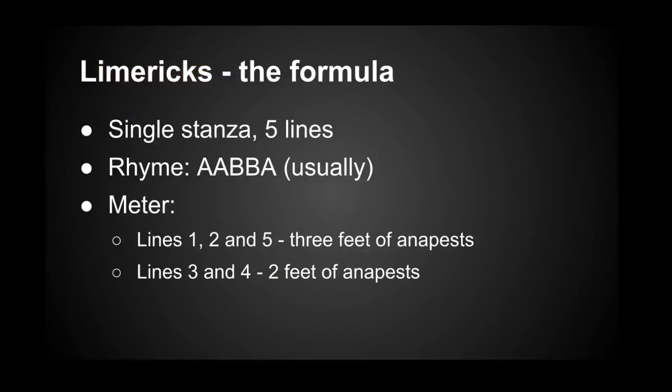And behold, the limerick formula. It's a single stanza with five lines. The rhyme scheme is usually A-A-B-B-A — each letter represents one of the five lines, and lines with the same letter rhyme with each other. The first two lines and the last line rhyme with each other, while the third and fourth lines rhyme with each other as well. Limericks are mostly written using an anapestic accentual meter, though the rules are treated more like guidelines.